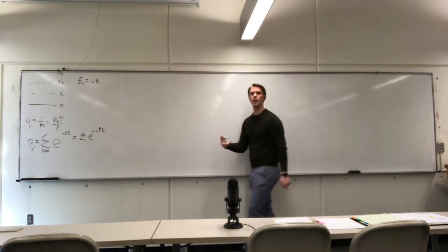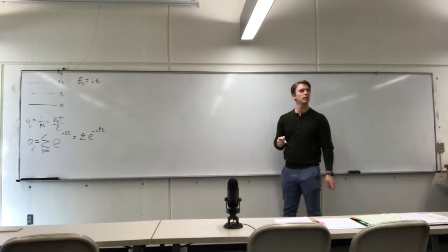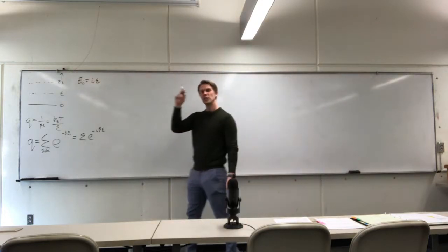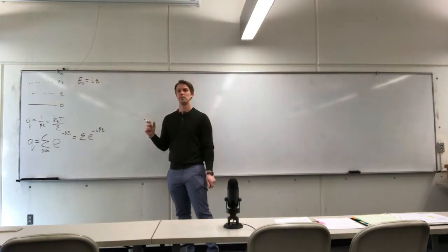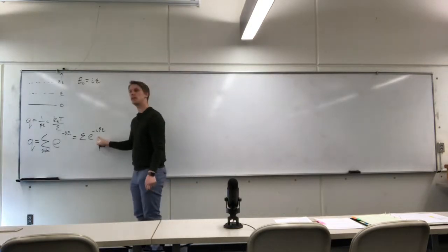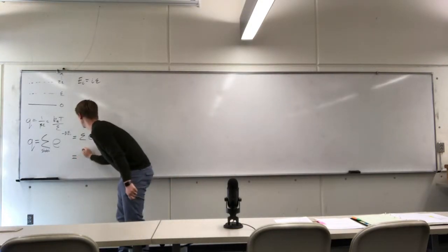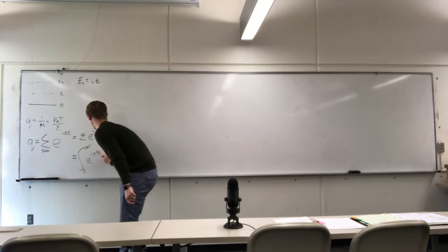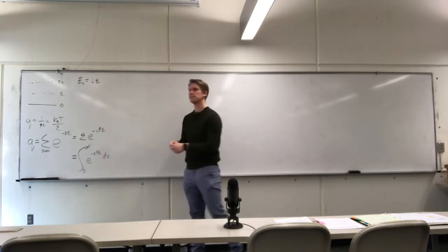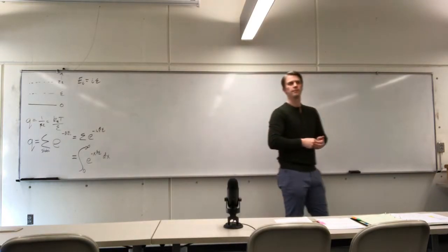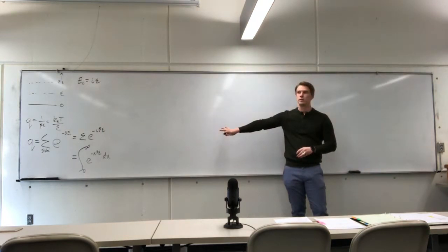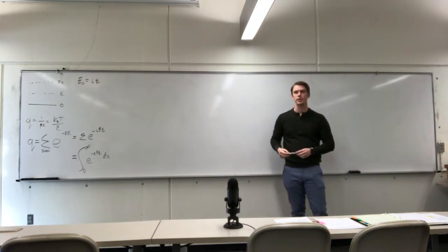What's the second clue given in this problem statement? It says assume that the energy level spacings are very, very small. Which means we can approximate this summation as an integral going from 0 to infinity of E to the negative i·beta·epsilon di. In my solution I changed it to X just to make it distinct. From here it should be a straightforward endeavor to integrate that.